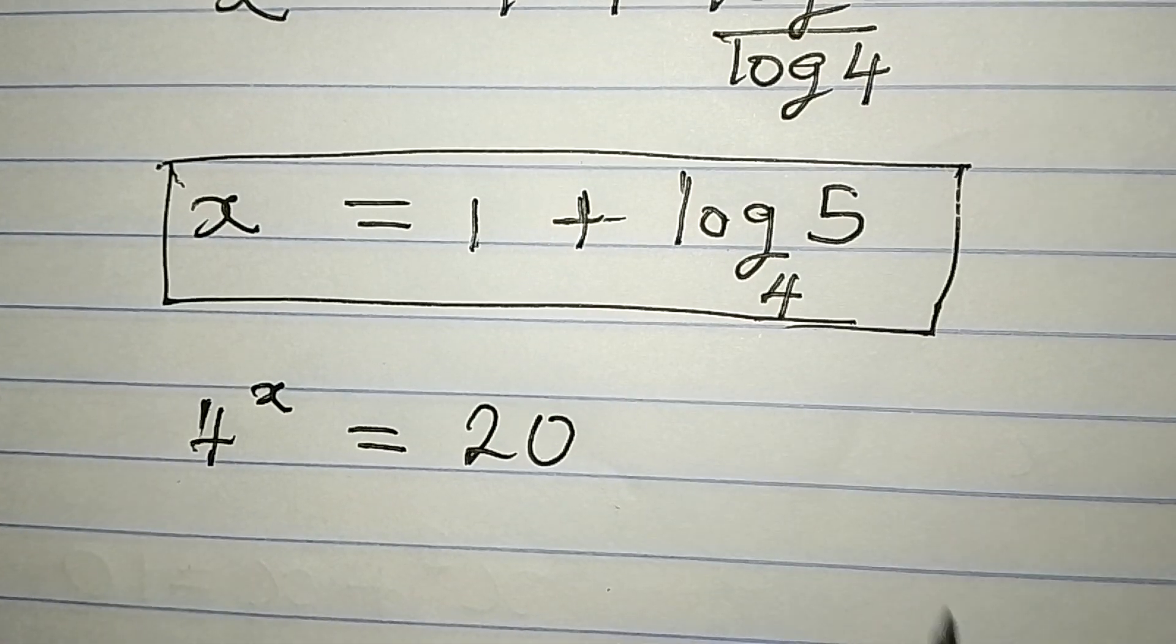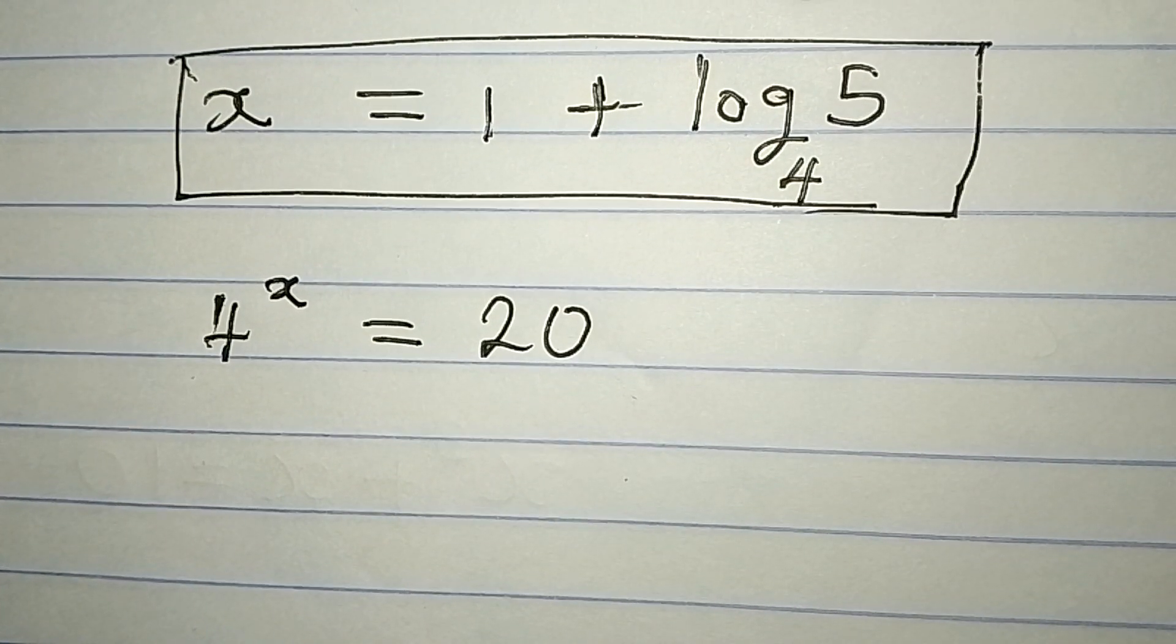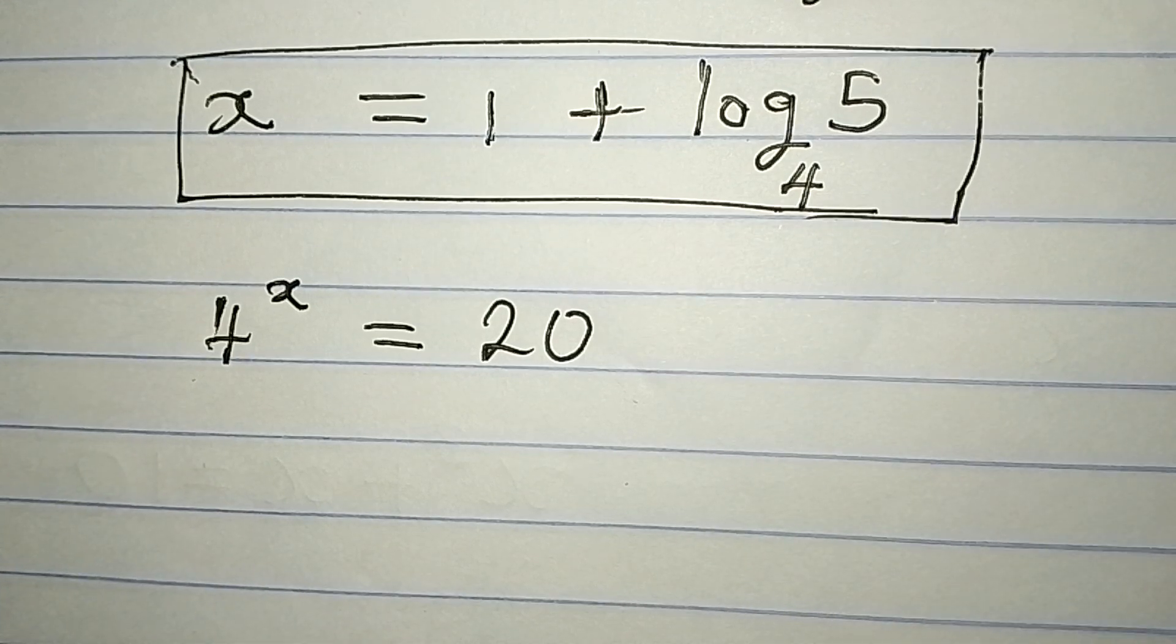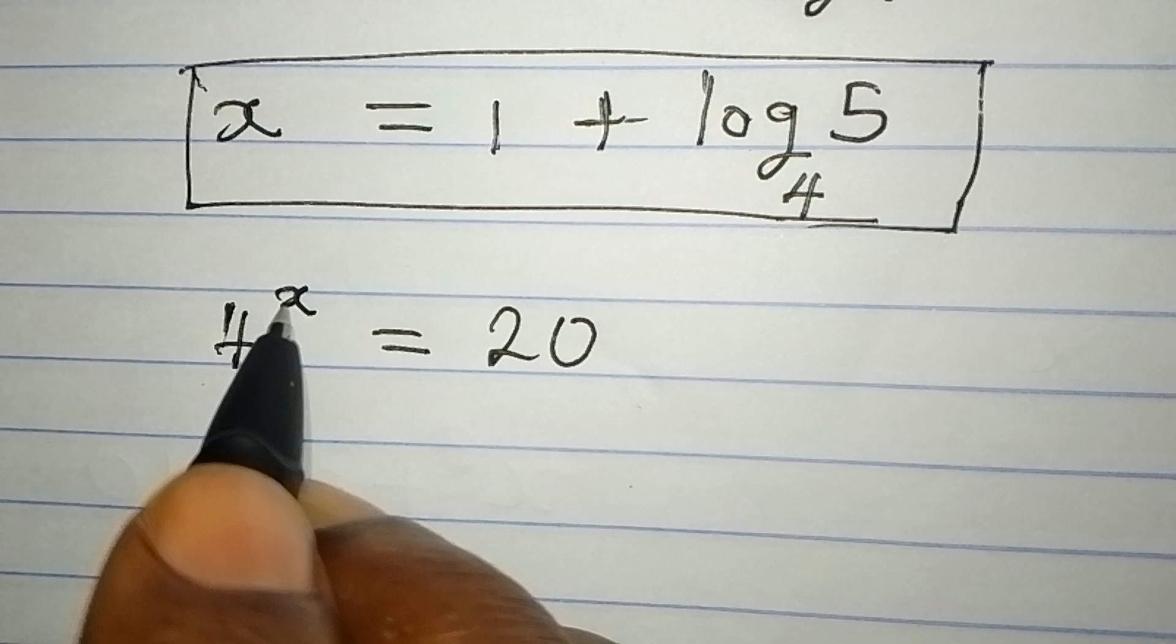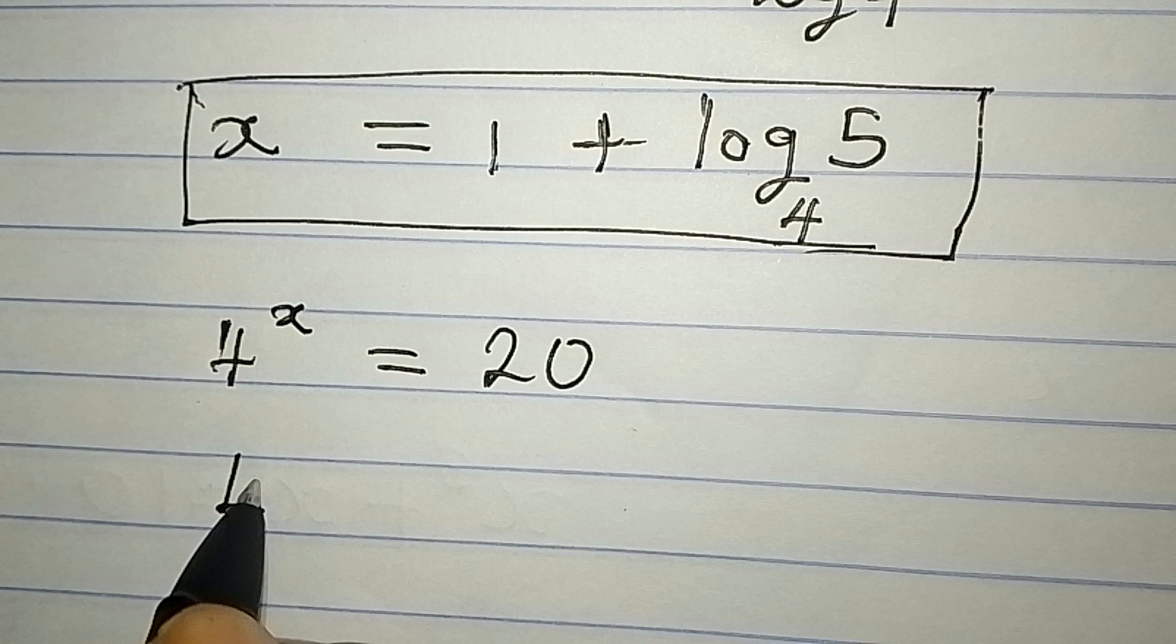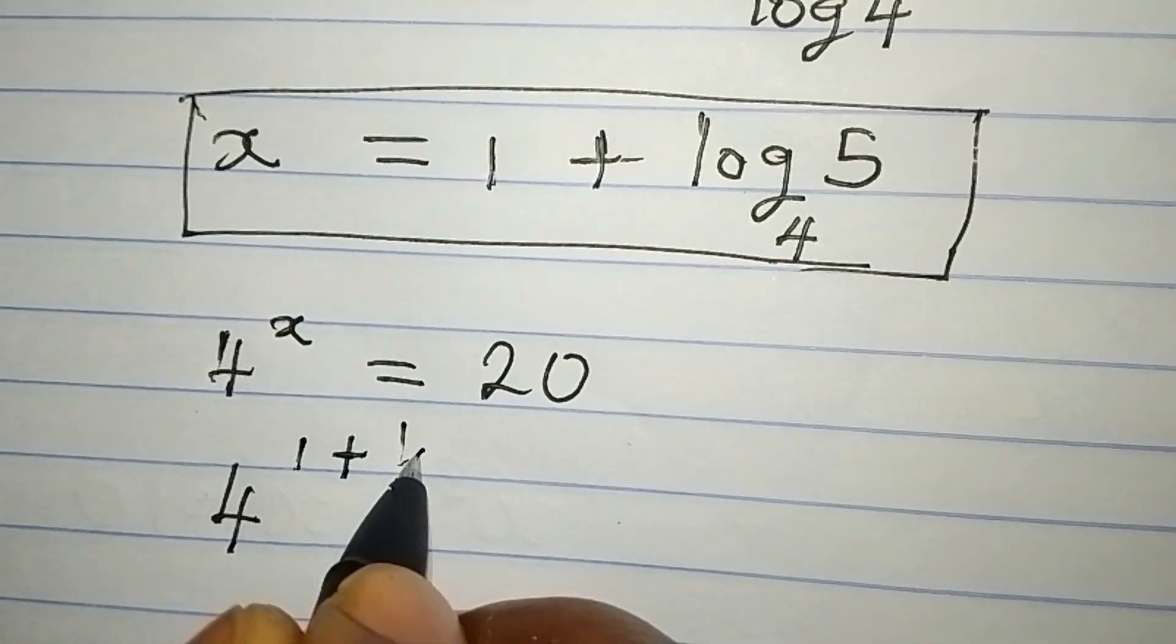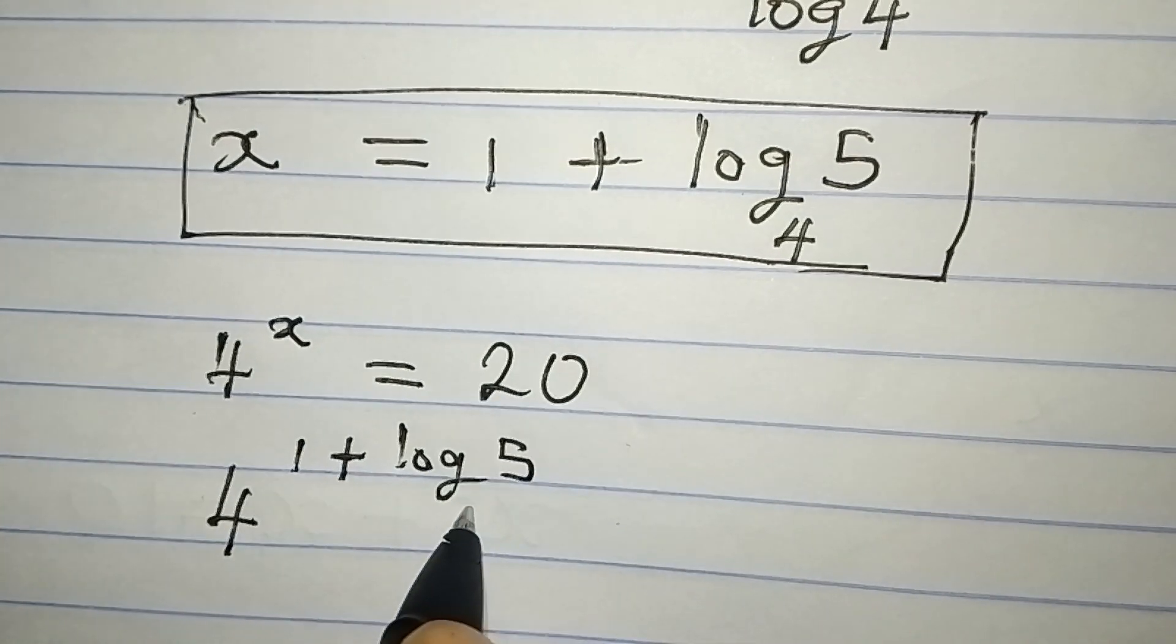So the question is how do we confirm this? Sit back and learn because I'm going to talk about a couple of things about logarithm. From here, our x is now 1 plus log 5 over 4. So I'll write 4 to the power of 1 plus log 5 to base 4.